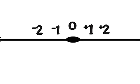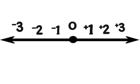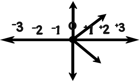A number line shows numbers in order. A number line can go in any direction, but we most often use a horizontal one.